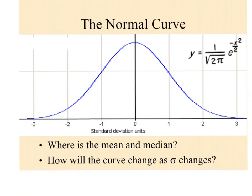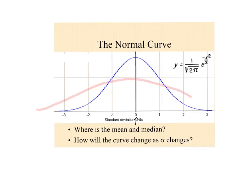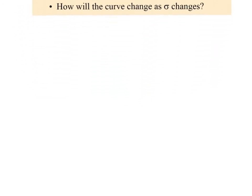The mean and the median are located at the same spot, smack dab in the middle. What happens as the standard deviation changes? If it gets bigger, the curve is more spread out — stretched wider. If the standard deviation is smaller, the curve is tighter, taller, and skinnier — more closely clustered, pinned in toward the center.